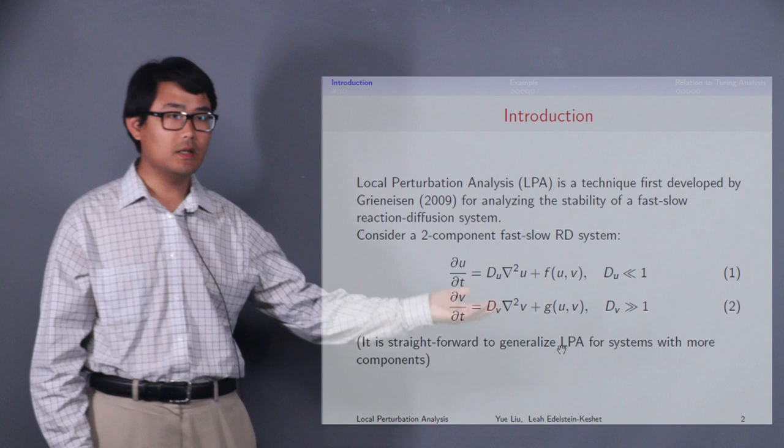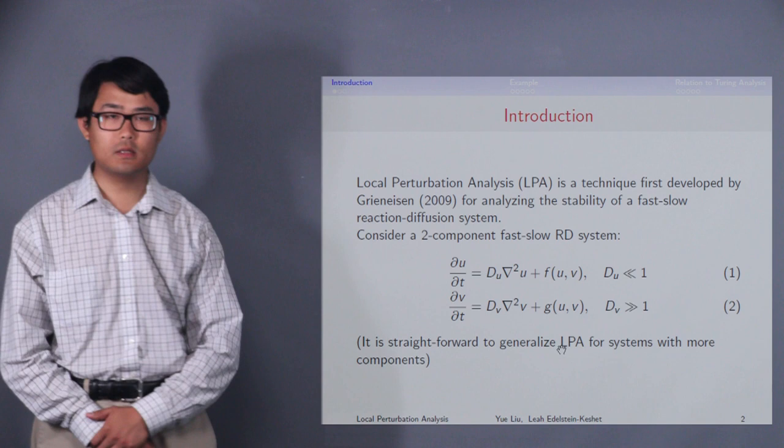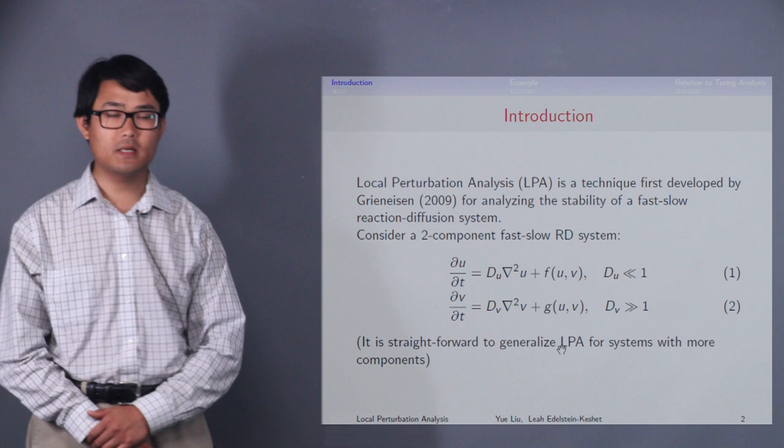u is the slow diffusing variable, and v is the fast diffusing variable. du and dv are their respective diffusion coefficients. It is quite straightforward to generalize this method for systems with more than two components.